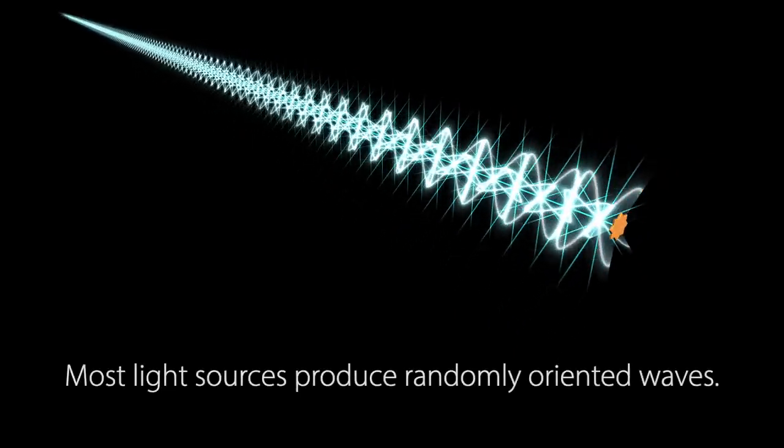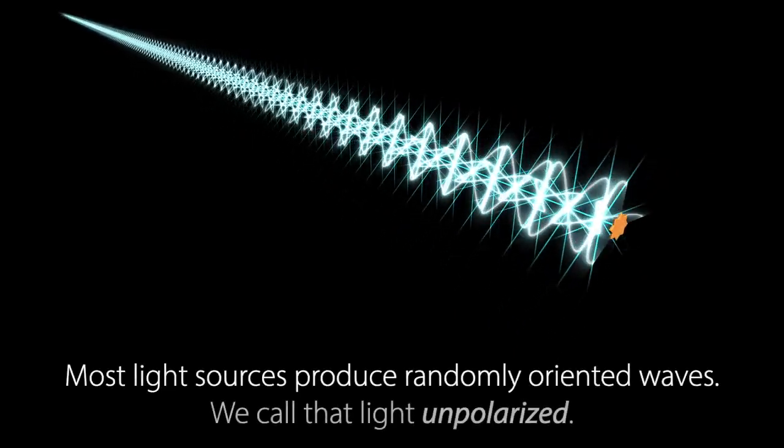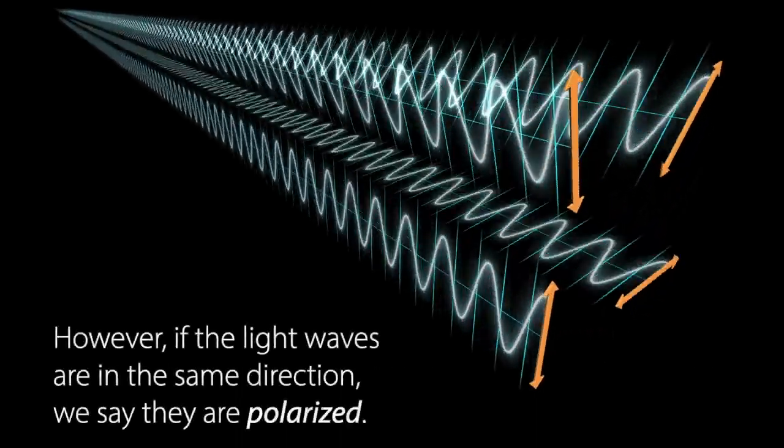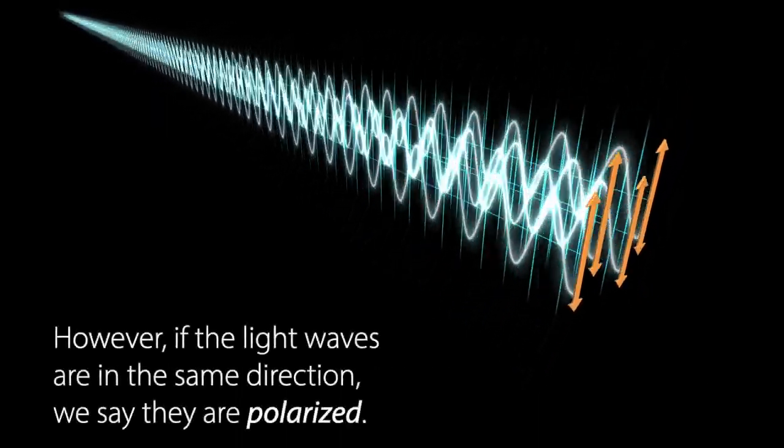Most light sources produce randomly oriented waves. We call that light unpolarized. However, if the light waves are in the same direction, we say they are polarized.